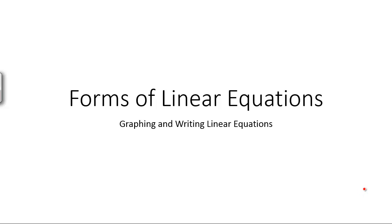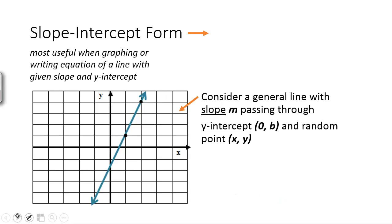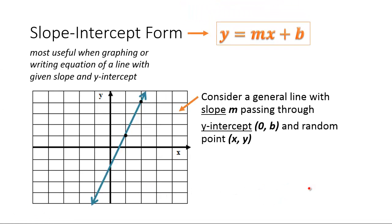This lesson looks at graphing and writing various forms of linear equations. Let's recall the slope-intercept form. This was explained previously, but let's just quickly take a look at it again. This formula is actually really useful when graphing or writing an equation of a line if you're given the slope and the y-intercept.